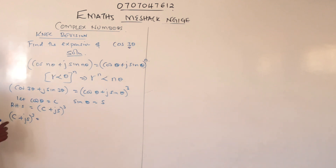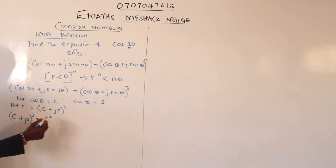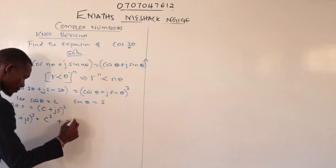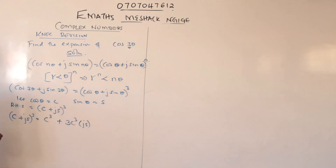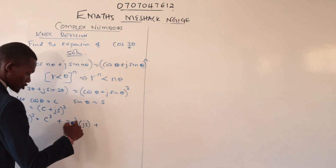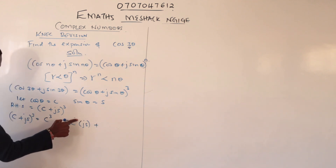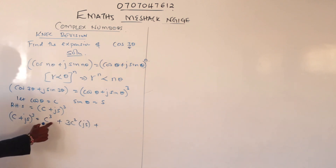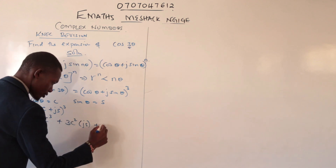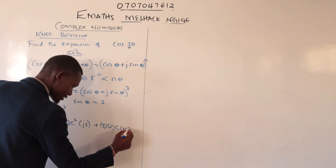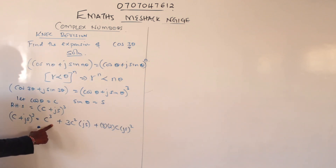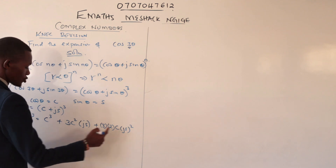To expand (c + js)³ binomially, we start with the highest power. We have c³ times (js)⁰, and anything to the power zero is one. Then we drop the power by one and introduce the second variable js, giving c² times js. Then we drop the power again and increase the power of js by one, giving us c¹ times (js)².